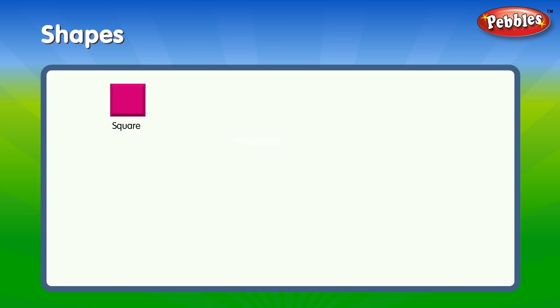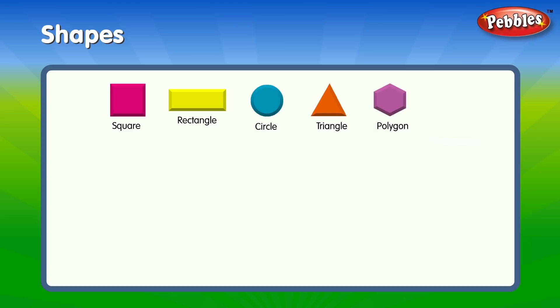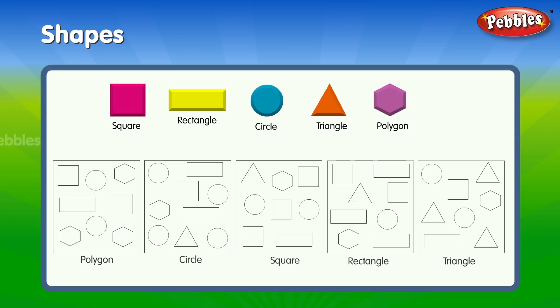Shapes: Square. Rectangle. Circle. Triangle. Polygon. Colour the shapes stated under each square box.